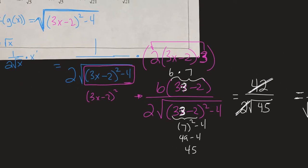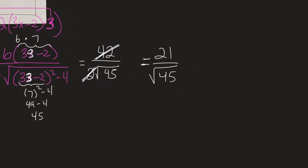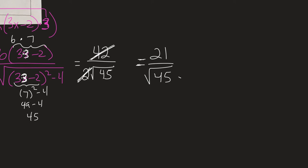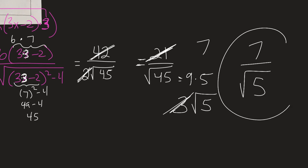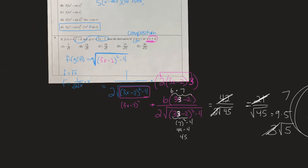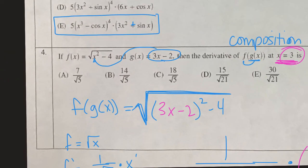Since 45 is 9 times 5 and the square root of 9 is 3, root 45 becomes 3 root 5. So 21 over 3 root 5 simplifies to 7 over root 5. That matches one of the answer choices — 7 over root 5 is the answer.